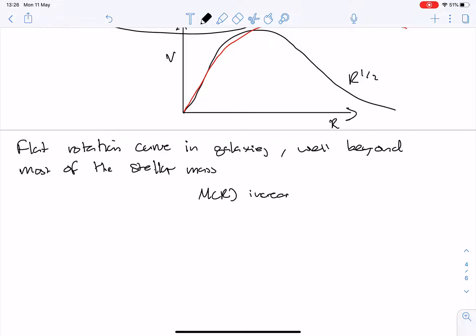And what that means is that M of R increases continuously. Not necessarily super fast, but it increases continuously to keep the rotation curves flat.